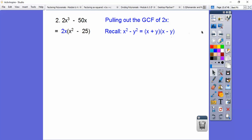x plus y times x minus y. So here we have x² - 5². So then this becomes x + 5, x - 5. Just don't forget about your 2x that you pulled out. So there's the answer right there.